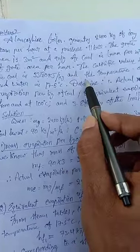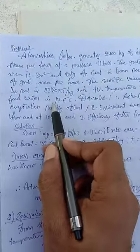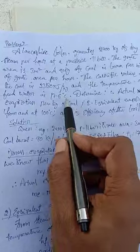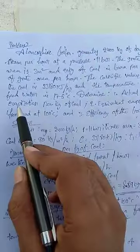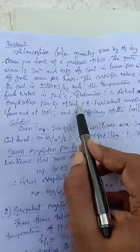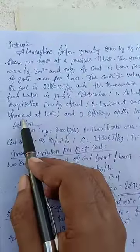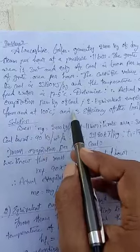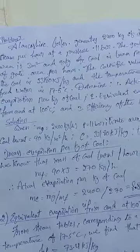The temperature of feed water is 17.5 degrees Celsius. Determine: first, actual evaporation per kg of coal; second, equivalent evaporation from and at 100 degrees Celsius; and third, efficiency of the boiler. The data is very clear, so we will see how to solve this problem.